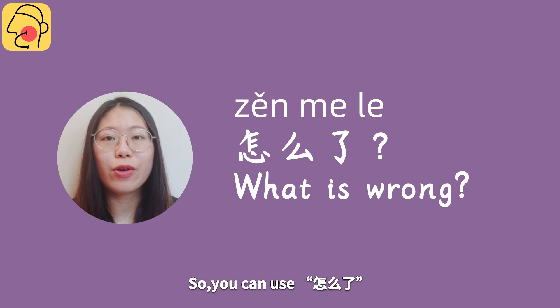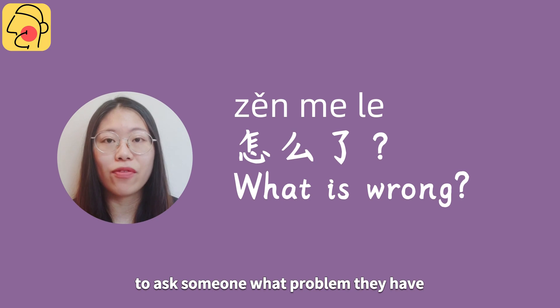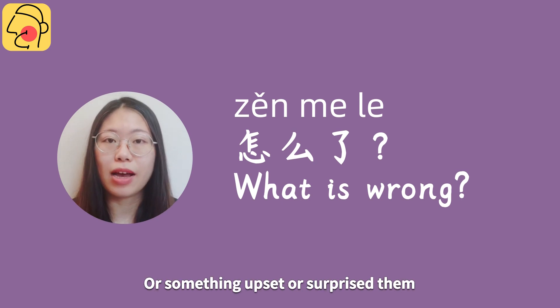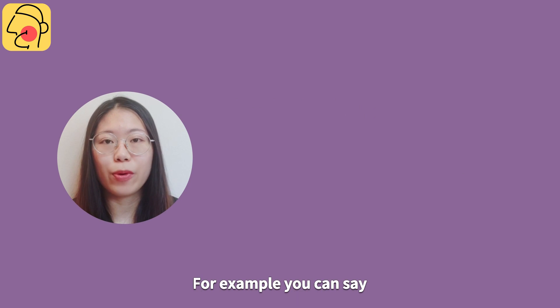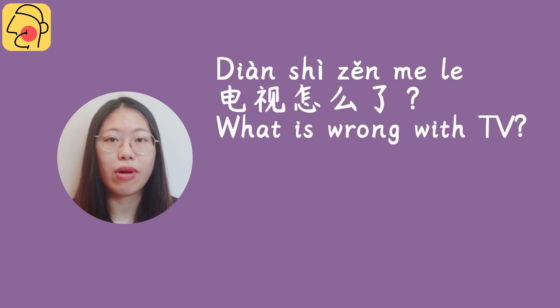So you can use 怎么了 to ask someone what problem they have, or what upset or surprised them. For example, you can say 电视怎么了? — What's wrong with the TV?